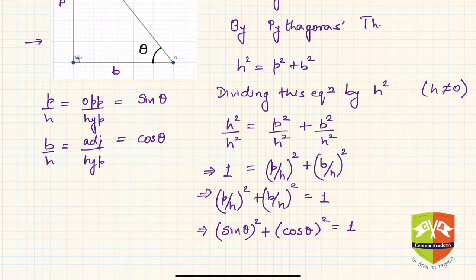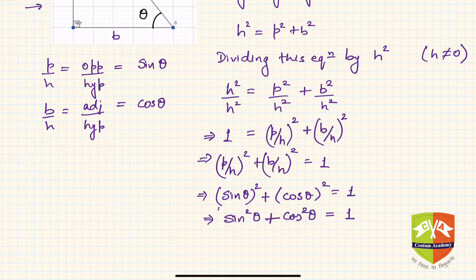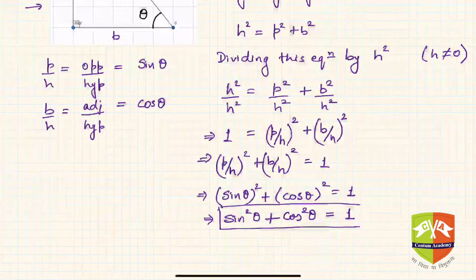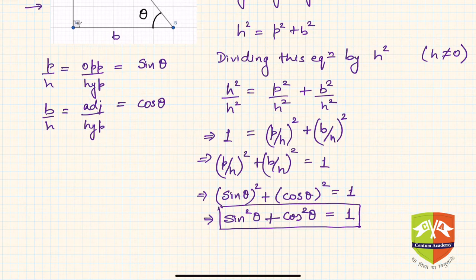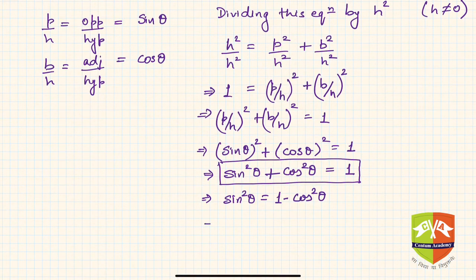This gives us the very famous relationship: sin²θ + cos²θ = 1. This can be further rearranged into forms that should also be remembered. sin²θ = 1 − cos²θ, and similarly cos²θ = 1 − sin²θ.